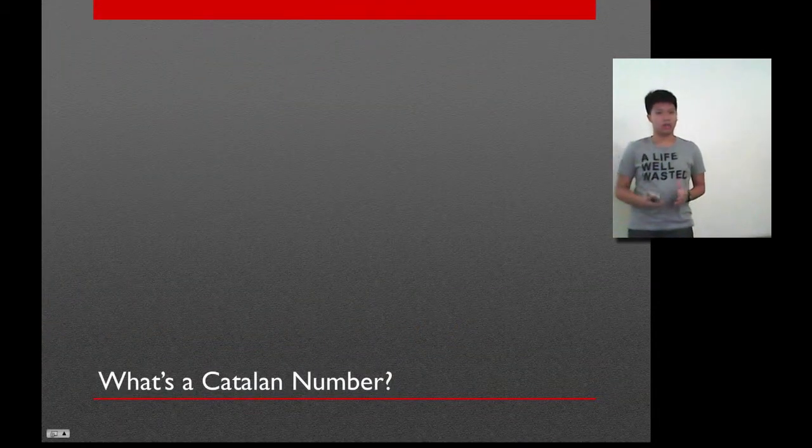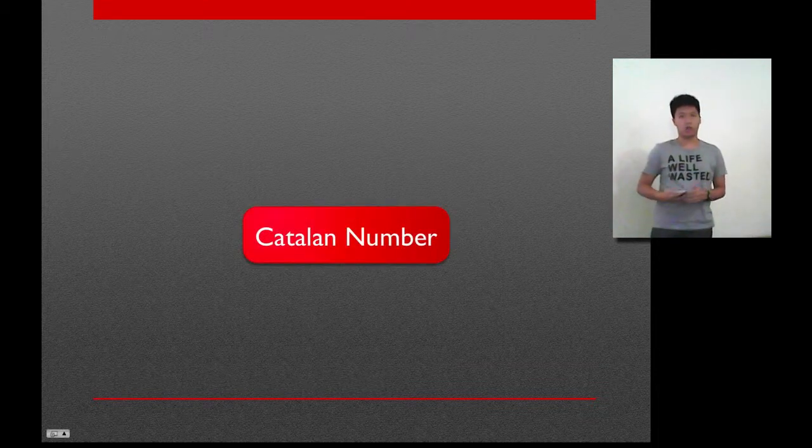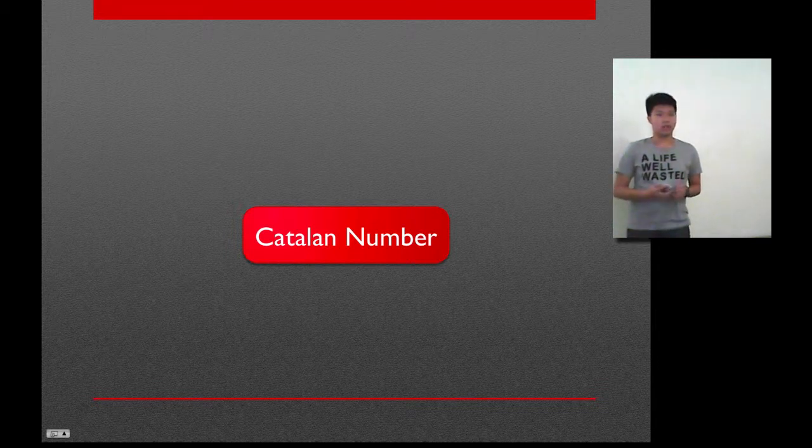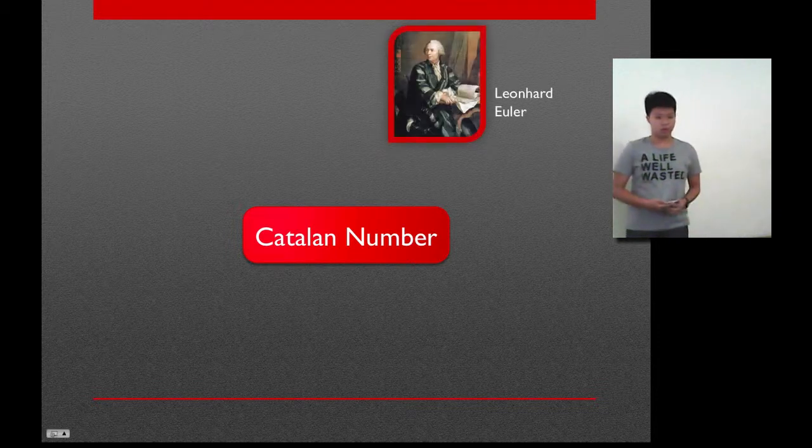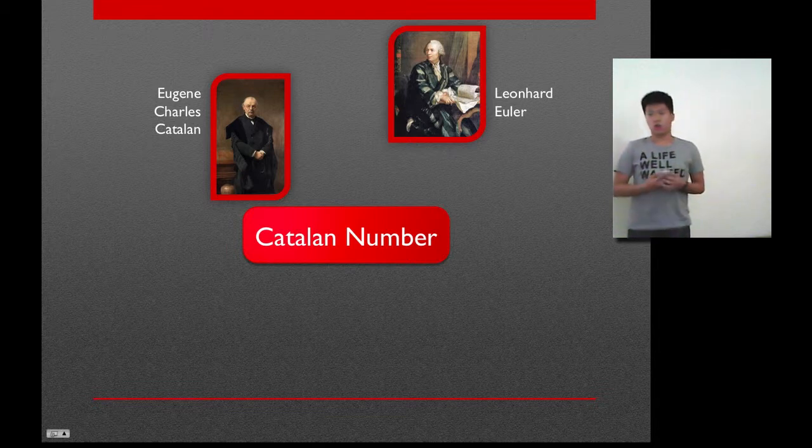What is a Catalan number? The history of the Catalan number is dated back to the 1600s, where a Chinese mathematician had found the Catalan numbers. But two people are notably known for finding the Catalan numbers, which are one, Leonhard Euler, and two is Eugene Charles Catalan, who also takes part in the name.